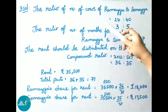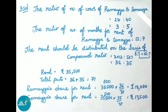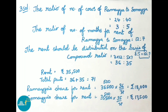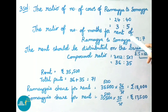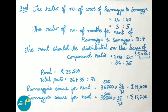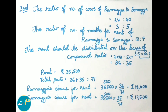The ratio of number of cows of Ramaya to Somaya is 24 is to 40. Dividing both terms by 8, the ratio is 3 is to 5. Next, the ratio of number of months of rent of Ramaya to Somaya is 12 months to 7 months, that is 12 is to 7.